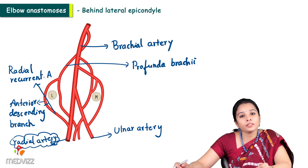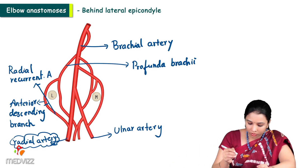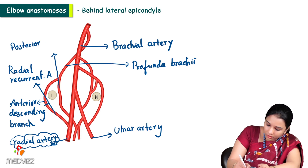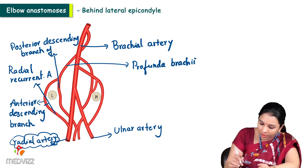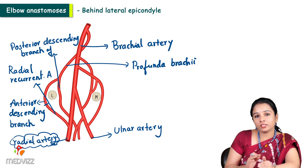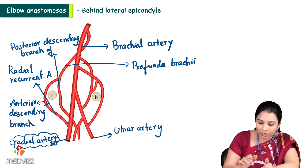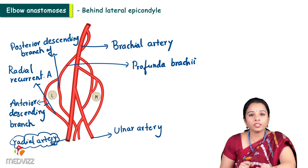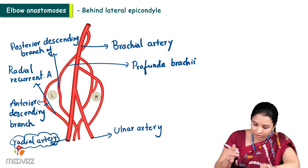Posterior to the lateral epicondyle, the posterior descending branch of the profunda brachii artery anastomoses with the interosseous recurrent artery, which is a branch of the posterior interosseous artery. So the posterior descending branch of the profunda brachii artery anastomoses with both the radial recurrent artery anteriorly and the interosseous recurrent artery posteriorly.